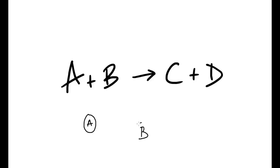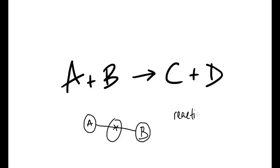And then of course we have B — again, a particle, could be a molecule, could be an atom. What will happen is, when this reaction takes place, these two things will collide and come together. At that point, one of two things will happen: there will be a reaction, or there will be no reaction, and they will just carry on as before.